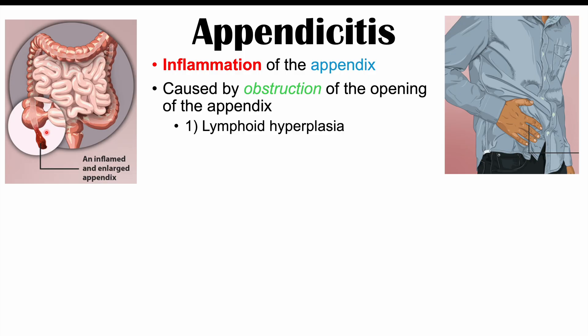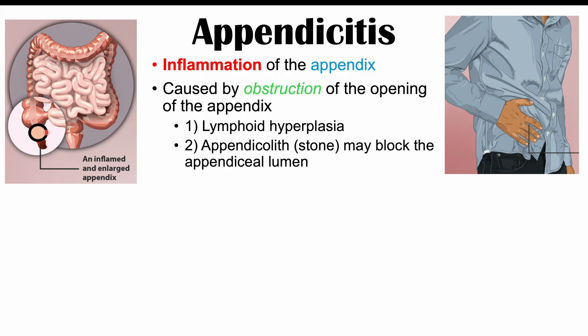Infections that lead to lymphoid hyperplasia are going to be seen more commonly in teenagers and young adults. Another important cause of obstruction of the opening of the appendix is what we call an appendicolith, which is actually a stone that can block the appendiceal lumen or the appendiceal opening. This is more common in elderly patients.